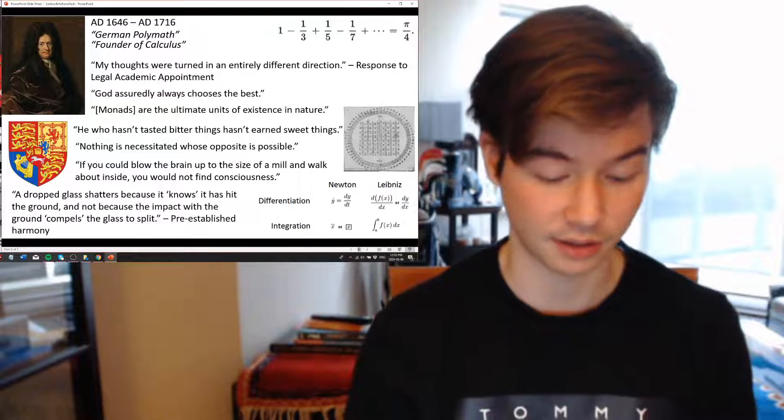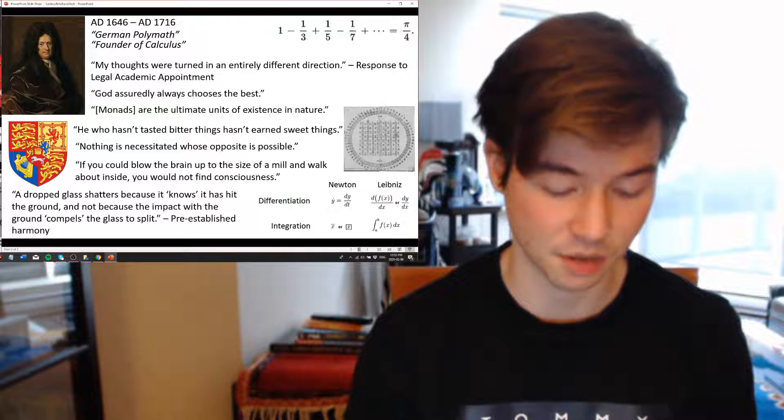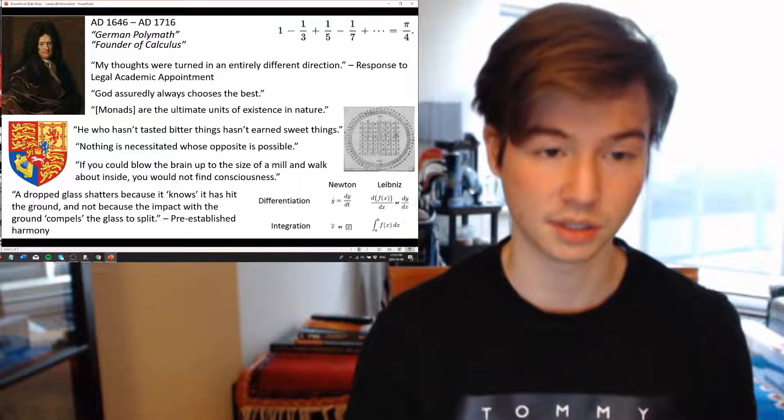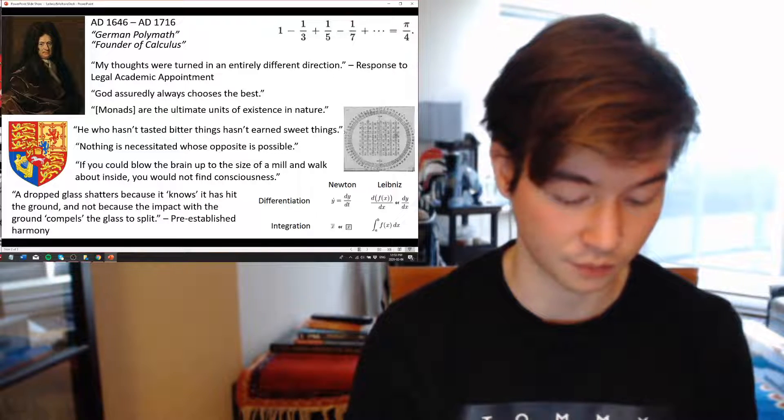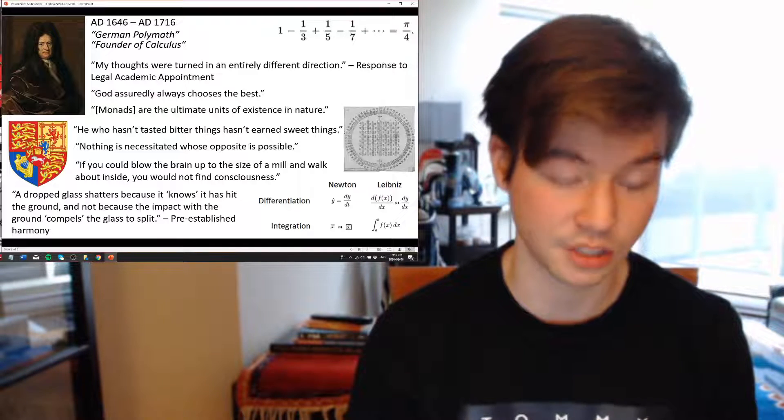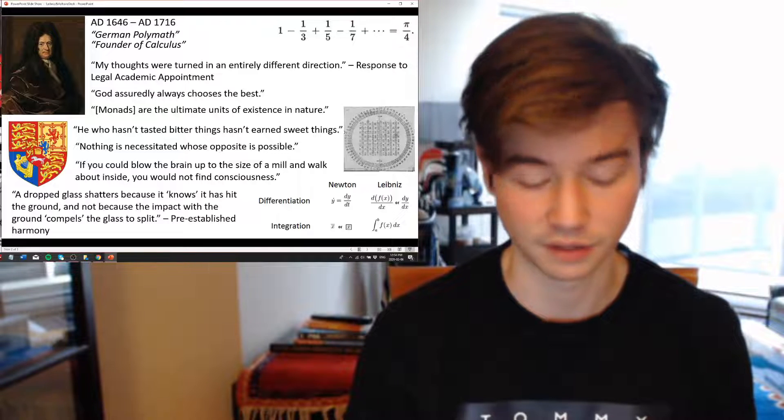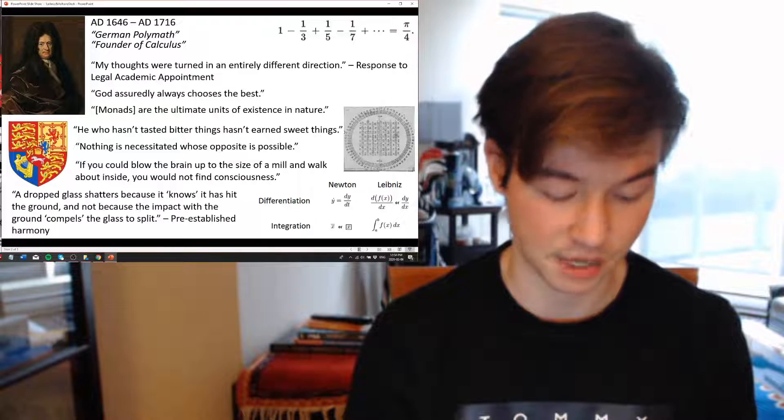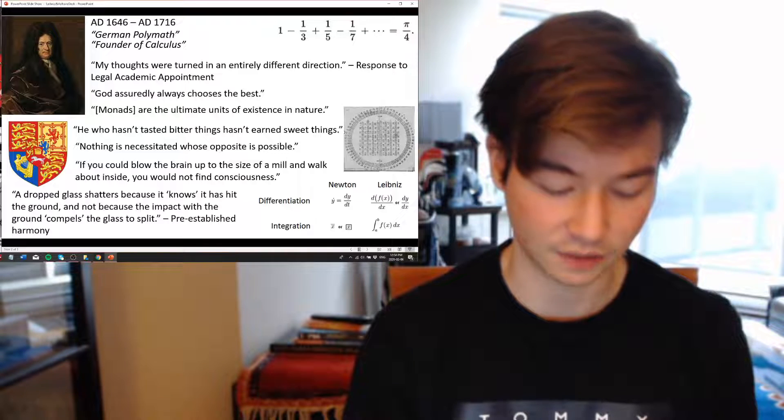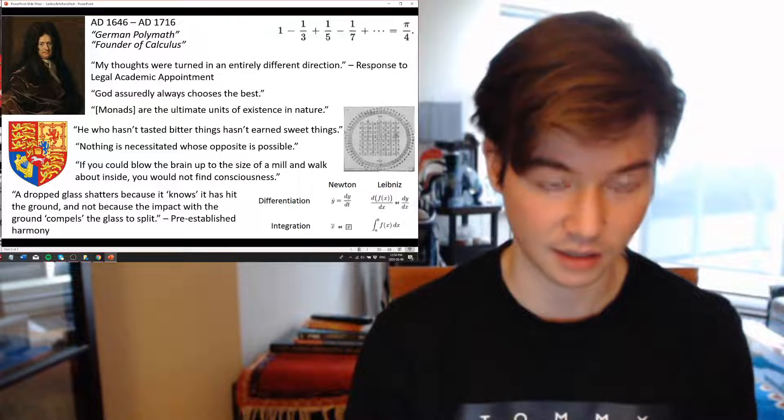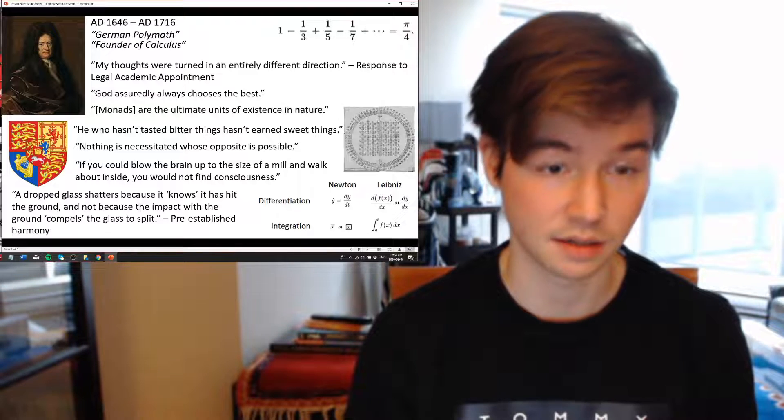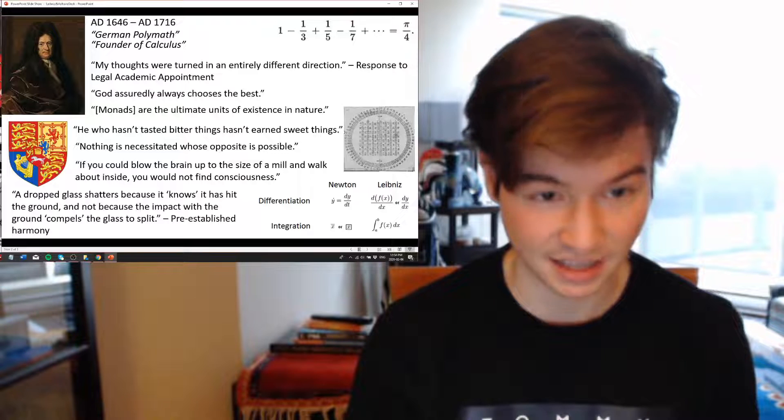His father, Friedrich, was a professor of moral philosophy, but he died when Leibniz was six years old. So, he inherited his entire library and lived and was raised by his mother. He learned Latin by the age of 12 and he was exposed to a wide variety of readings.